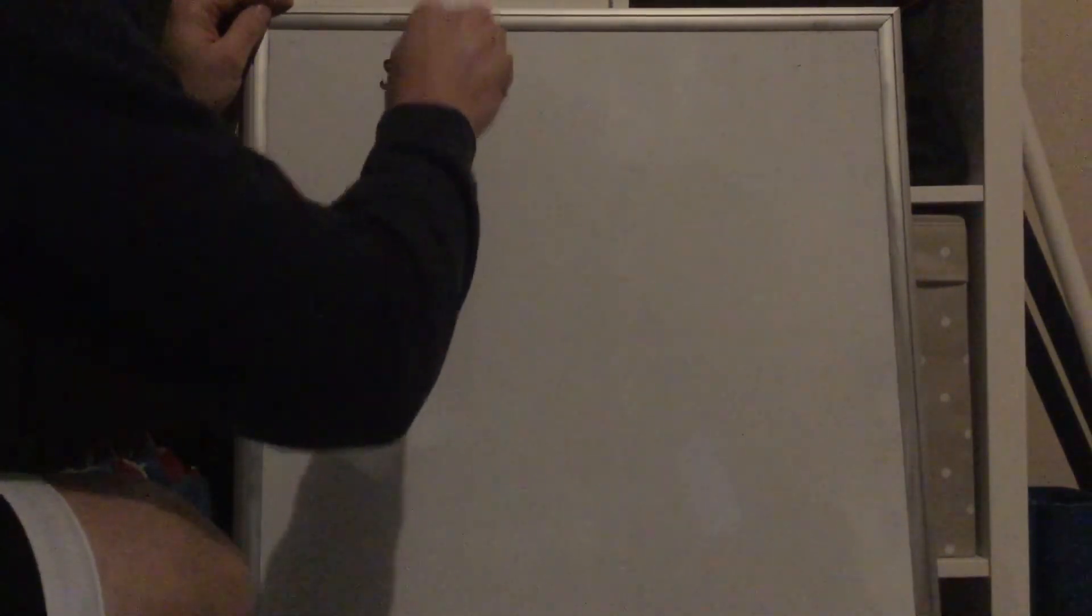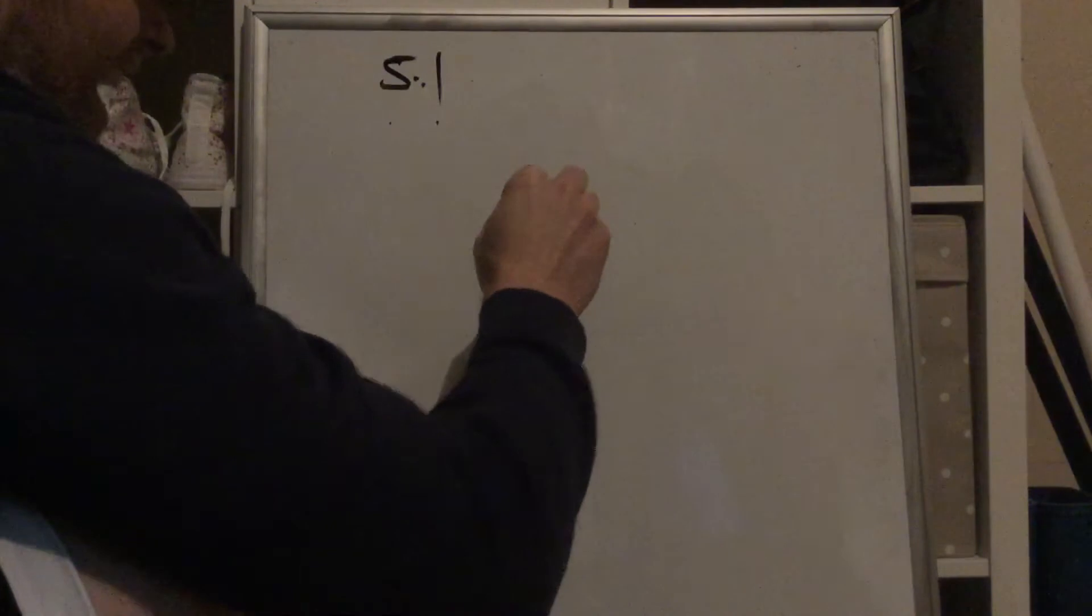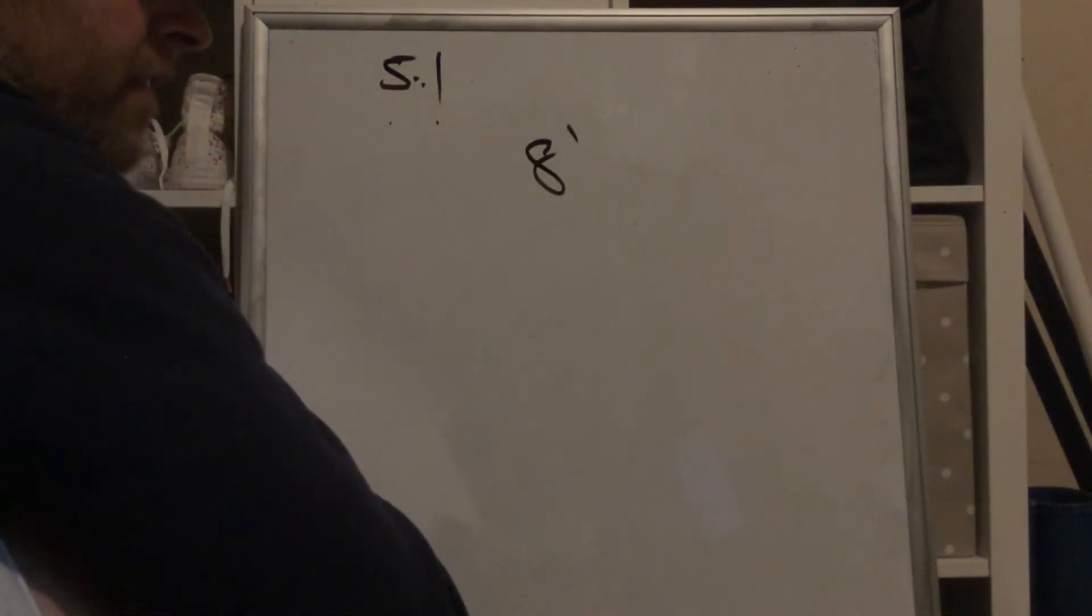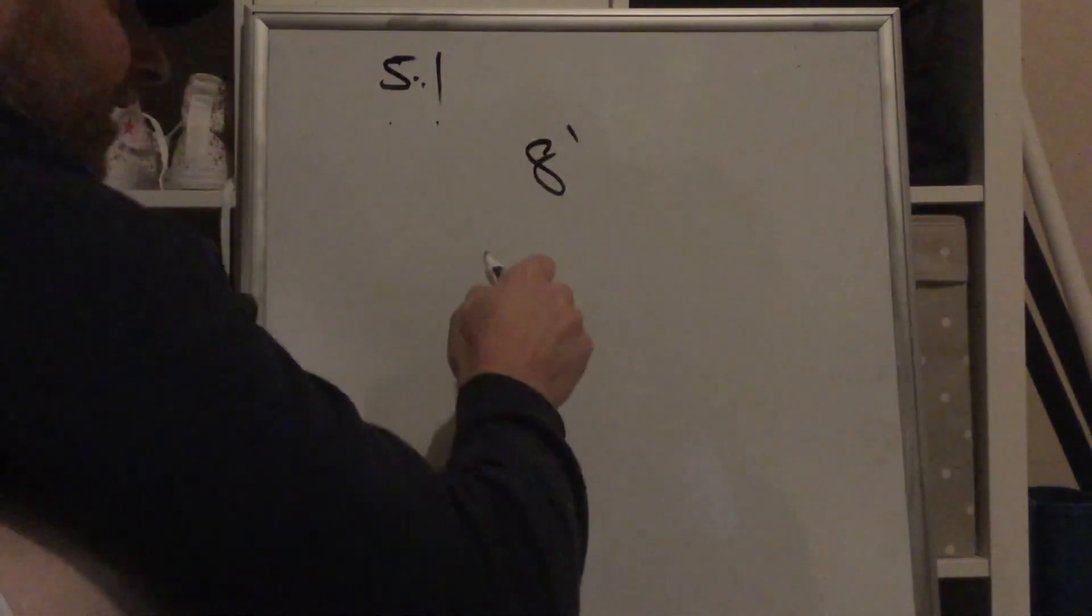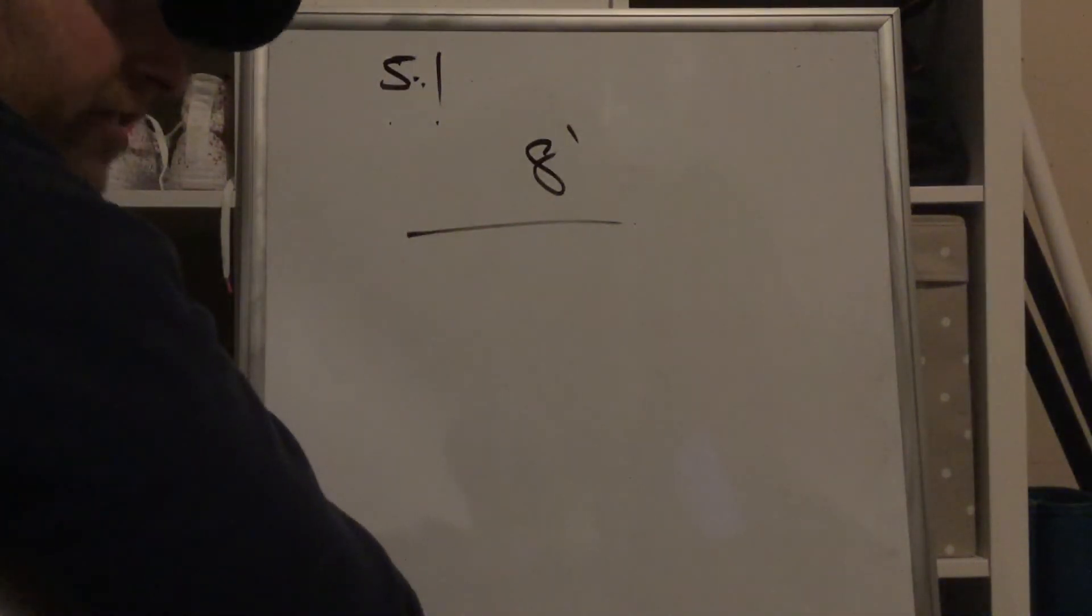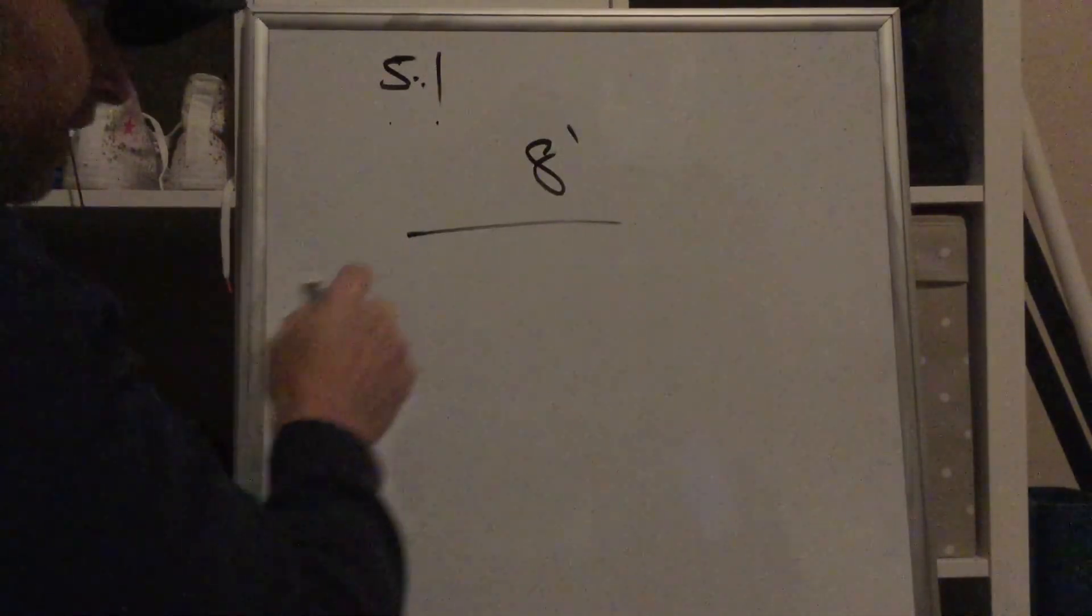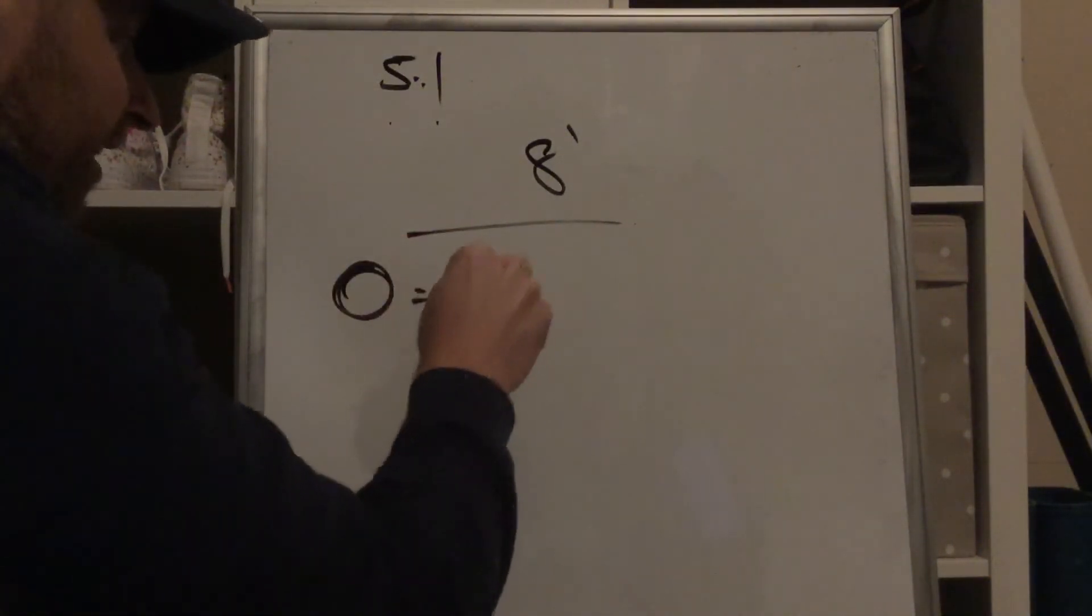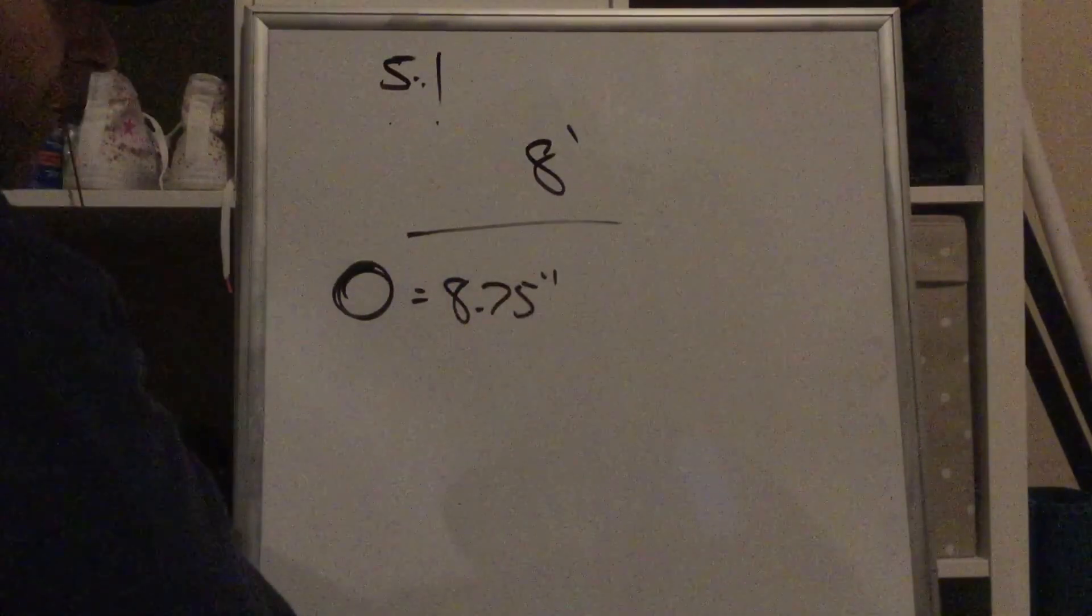And let's figure this out. So, we know we have a 5 to 1 system. Five motor spins makes one wheel spin. Alright? So we want to travel 8 feet. 8 feet, we've got to figure out how far that is to drive. Well, the last project, we took the wheel circumference and use it to figure out lengths. Right? We have smaller wheels. And those wheels are measured. Circumference is 8.75 inches.